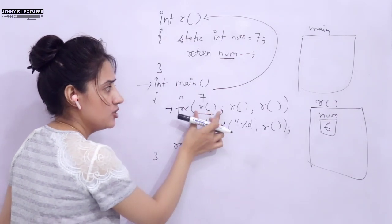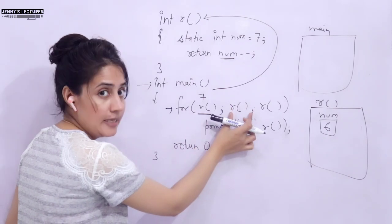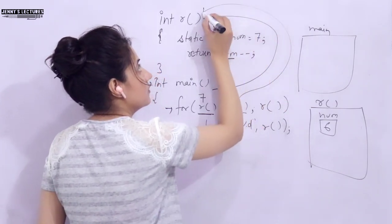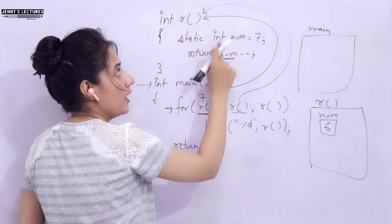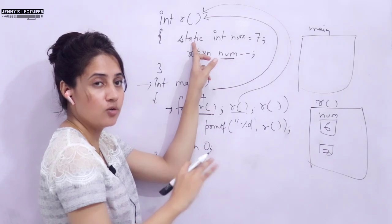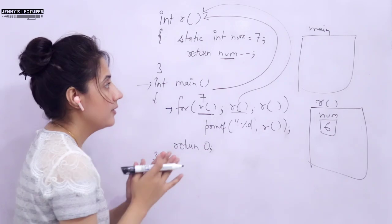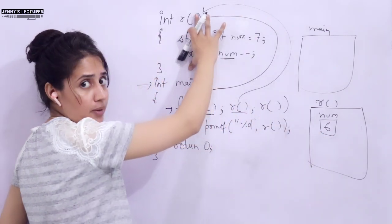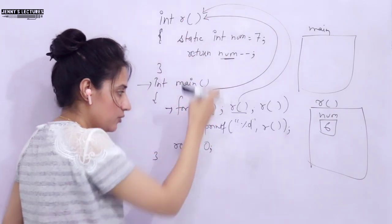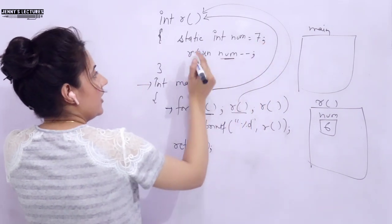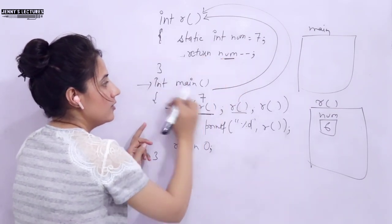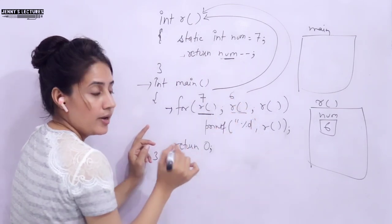Now after initialization, the for loop checks the condition. Control goes to the condition part where we are again calling function r. Since num is static, it holds its previous value of 6 — it is not re-initialized to 7. The function returns num-- which is 6 (the original value), so 6 is returned to the condition, and now num becomes 5. The condition has value 6, which is non-zero, so it is true — we enter the loop body.